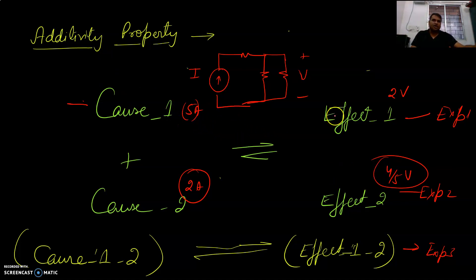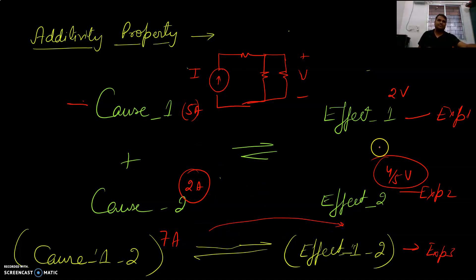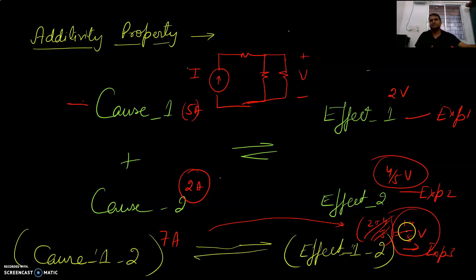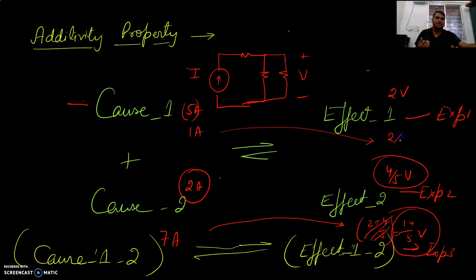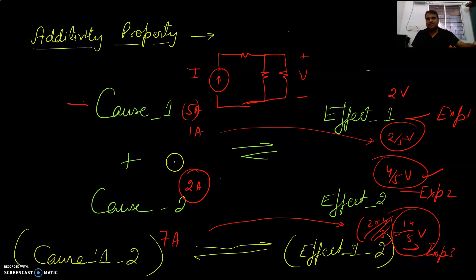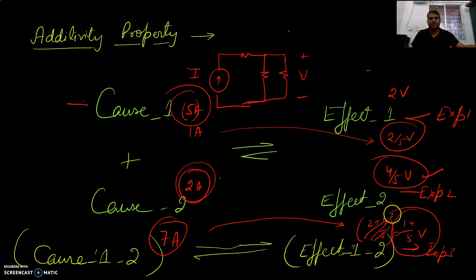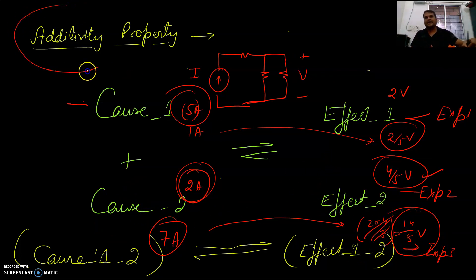Suppose you give 7 amperes now. The effect should be 2 plus 4/5, which is 14/5 volts. When you give 5 amperes you get 2 volts; giving 1 ampere gives 2/5 volts; giving 2 amperes gives 4/5 volts. If you combine both — giving 5 as well as 2, that is 7 amperes together — in the output you get 4/5 plus 2, which is 14/5 volts. The two causes are added and you get the sum of the two effects — this is called the additive property.